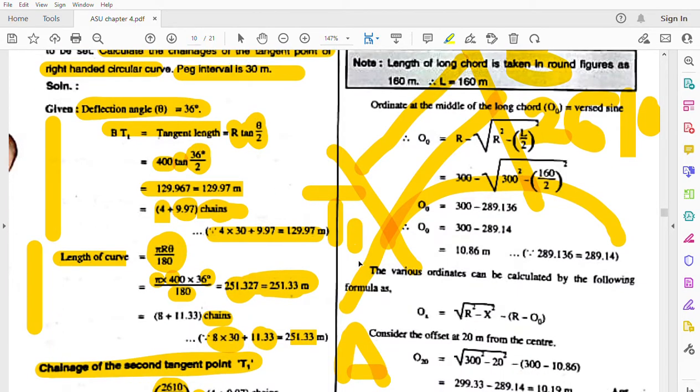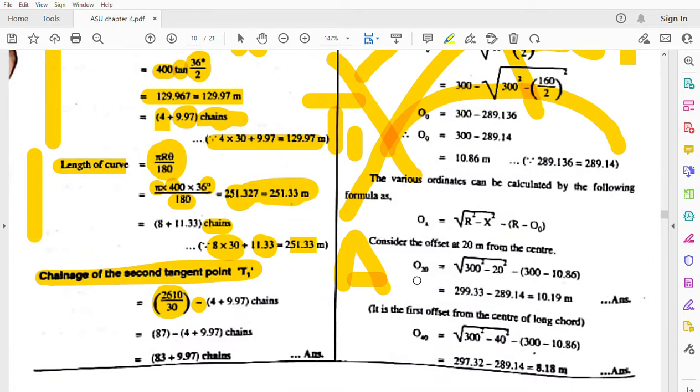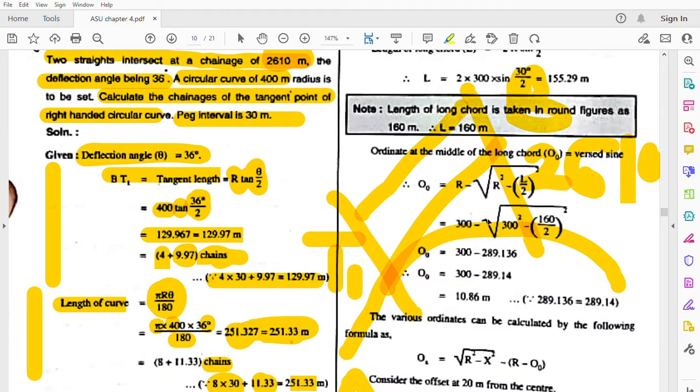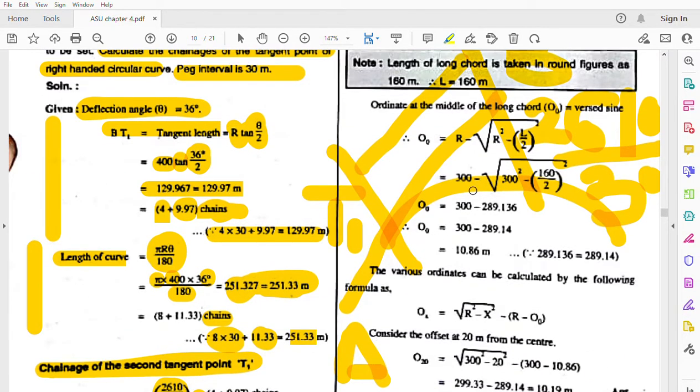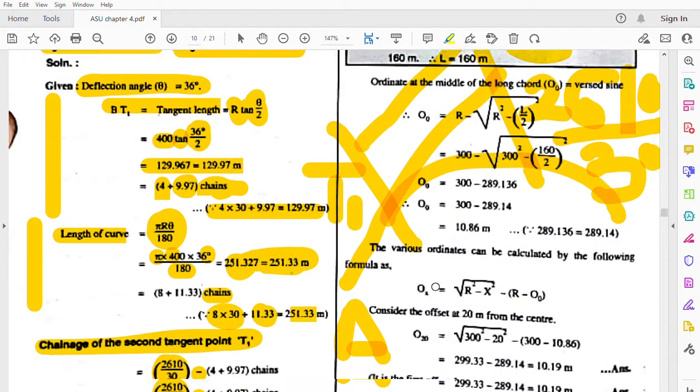2610 minus 129.97 will give you T1, or in terms of chains: this distance, the BT1 length, we subtract.